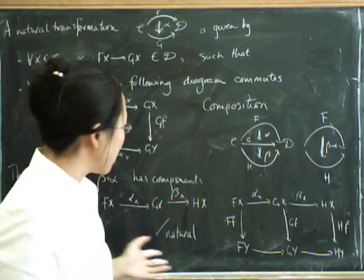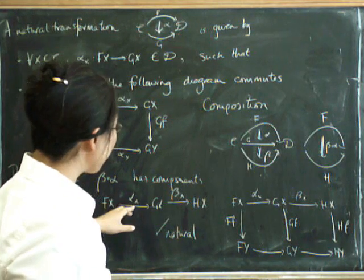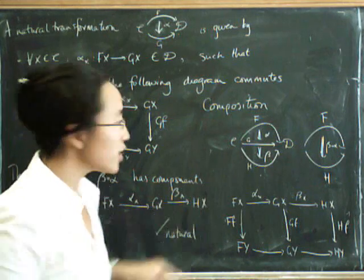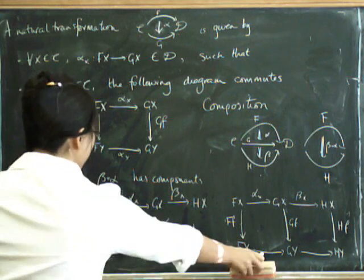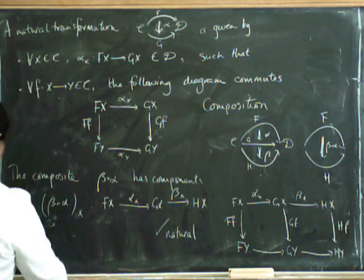Evidently it's going to be associative, because composition just happens by composing morphisms in the category. And it's also going to have a unit, identity.